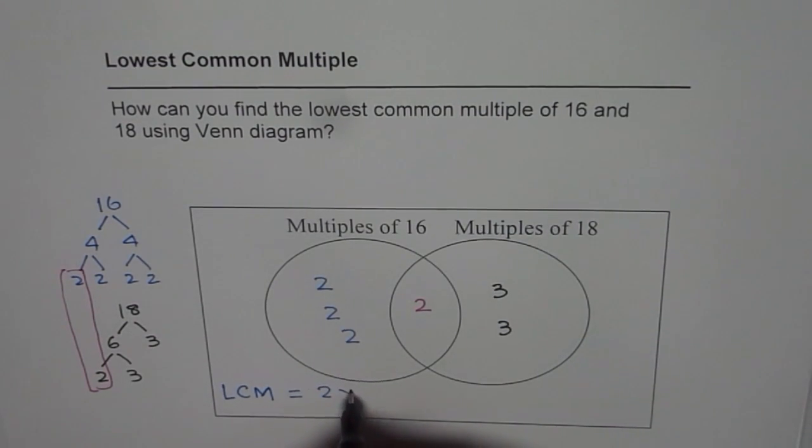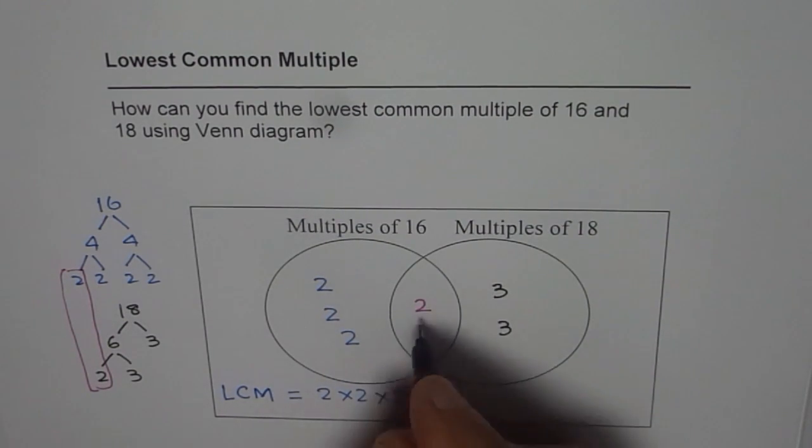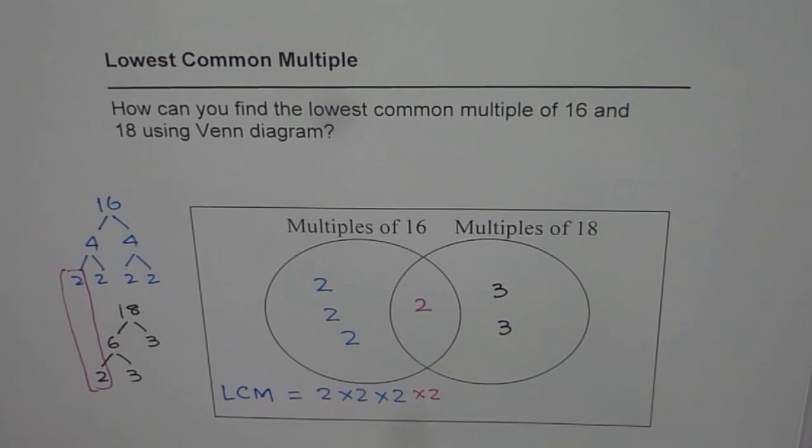That is 2 times 2 times 2, then times this 2, and then times by these two 3s. To get our answer,